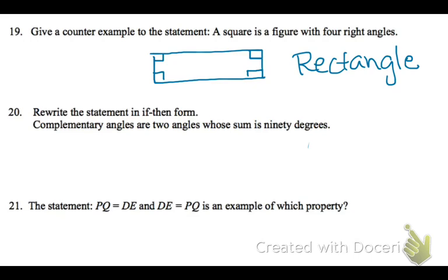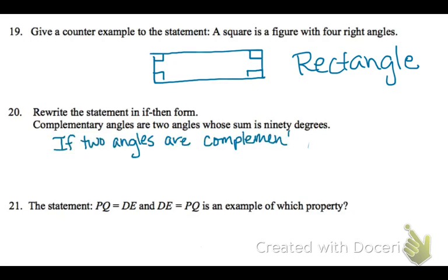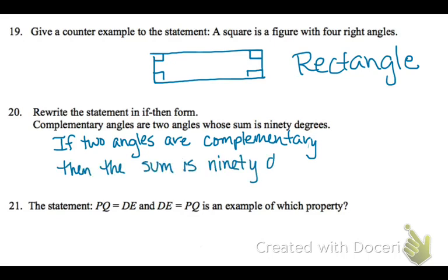Rewrite in if-then form means that you're going to state: if two angles are complementary, then the sum is 90 degrees.